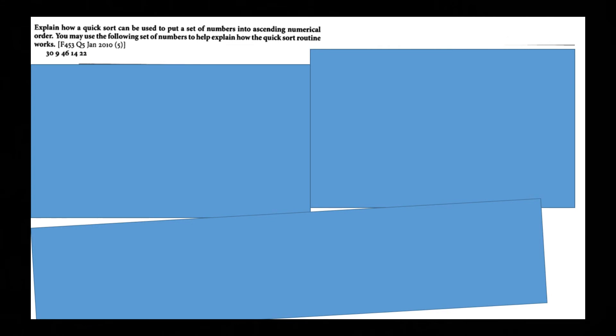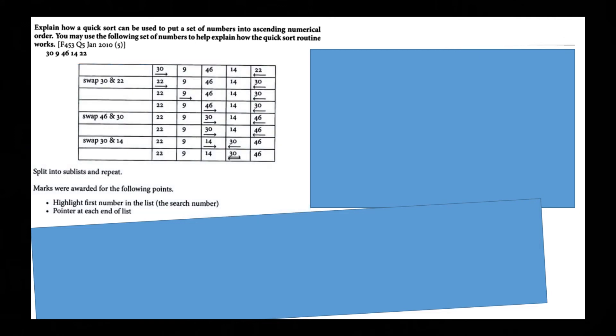Explain how a quicksort can be used to put a set of numbers into ascending numerical order. You may use the following set of numbers to help explain how the quicksort routine works. So 30, 9, 46, 14 and 22. So you can either do a routine which I'll show a bit later. But you can do it in a table. So swap 30 and 22. Swap 46 and 30. Then swap 30 and 14. So that the 30 is within the same order.